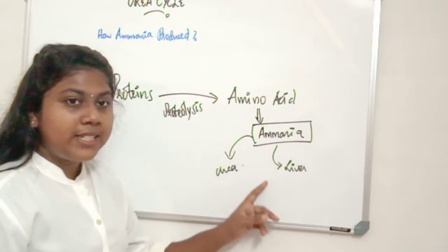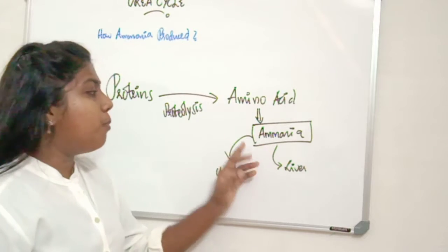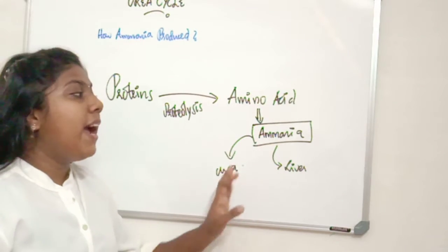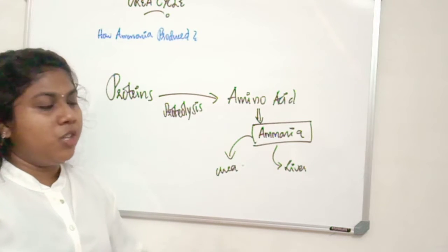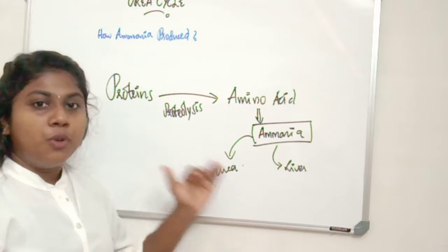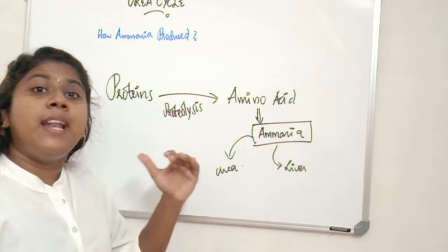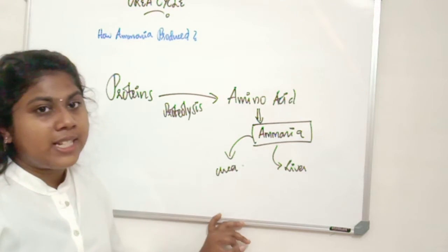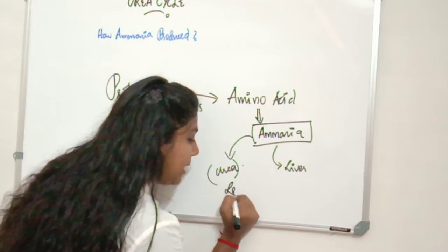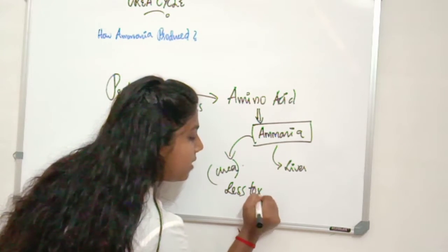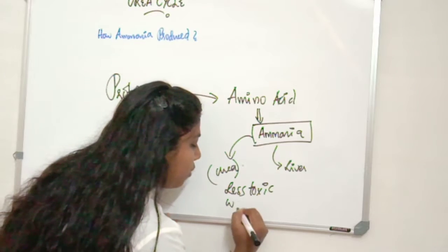We already said that the nitrogenous compound ammonia is highly toxic and this is water-insoluble too. So in order to make it less soluble and water-soluble, the liver functions to produce a less toxic material. The ammonia gets converted to urea. This urea is less toxic and water-soluble too.